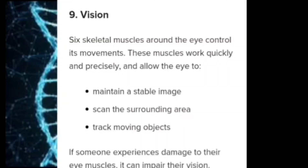Six skeletal muscles around the eye control its movements. These muscles work quickly and precisely and allow the eye to maintain a stable image, scan the surrounding area, and track moving objects. If someone experiences damage to their eye muscles, it can impair their vision.